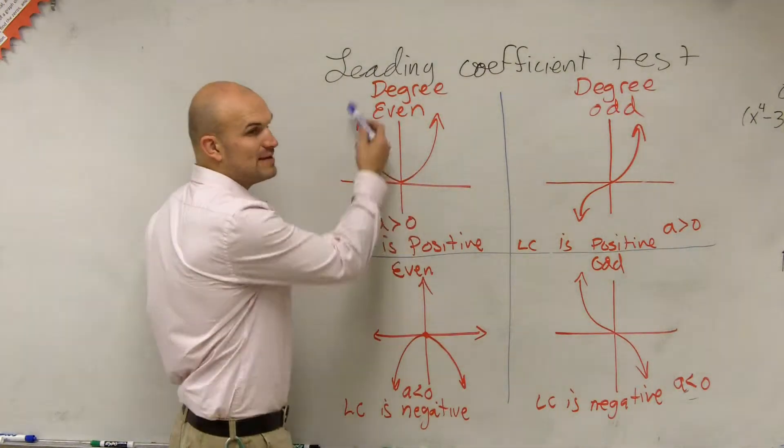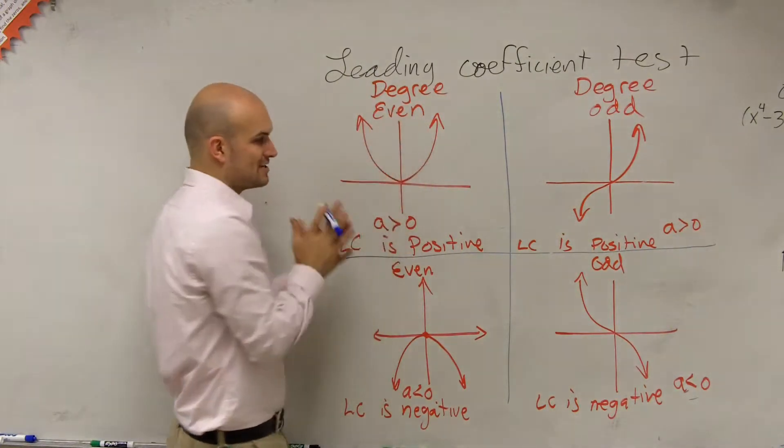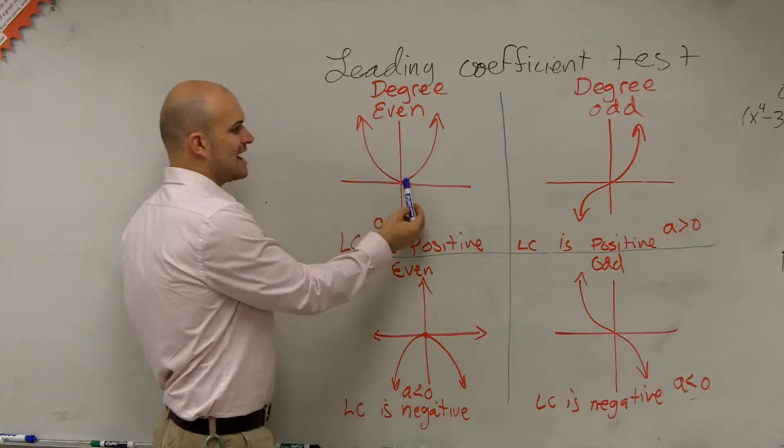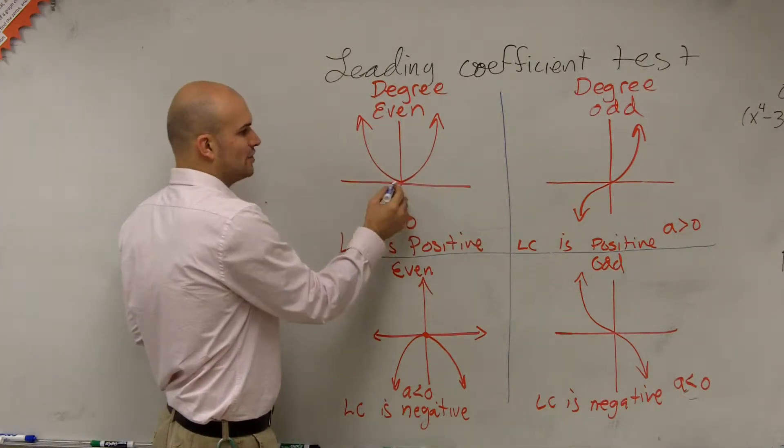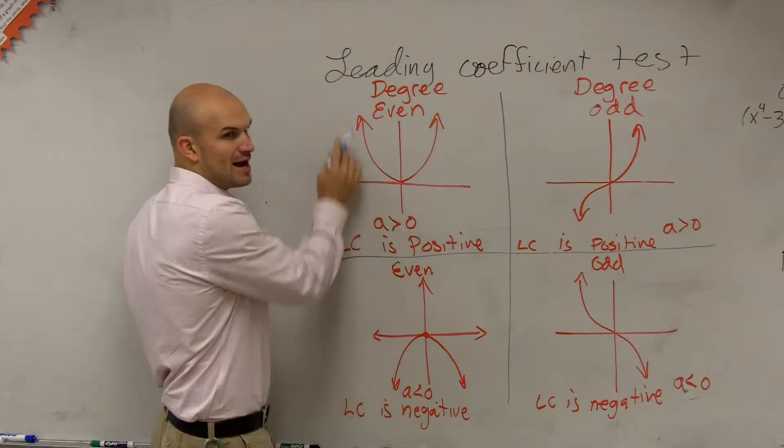This graph, the end behavior, right, this graph as we're going to expand, is it going to rise as I go to the left? As I move a little dot to the left, is my graph rising or falling?